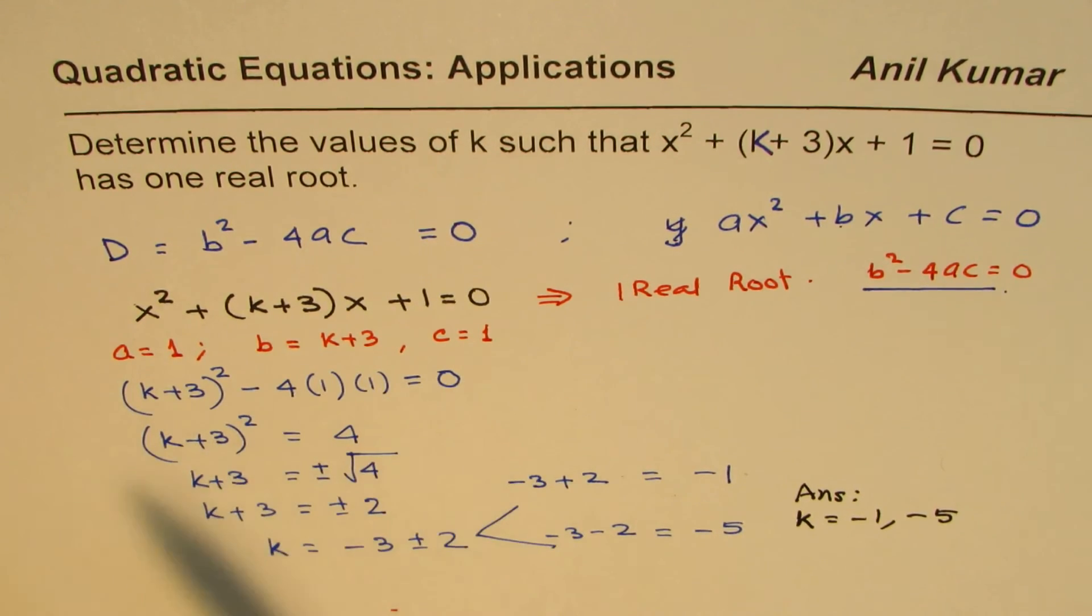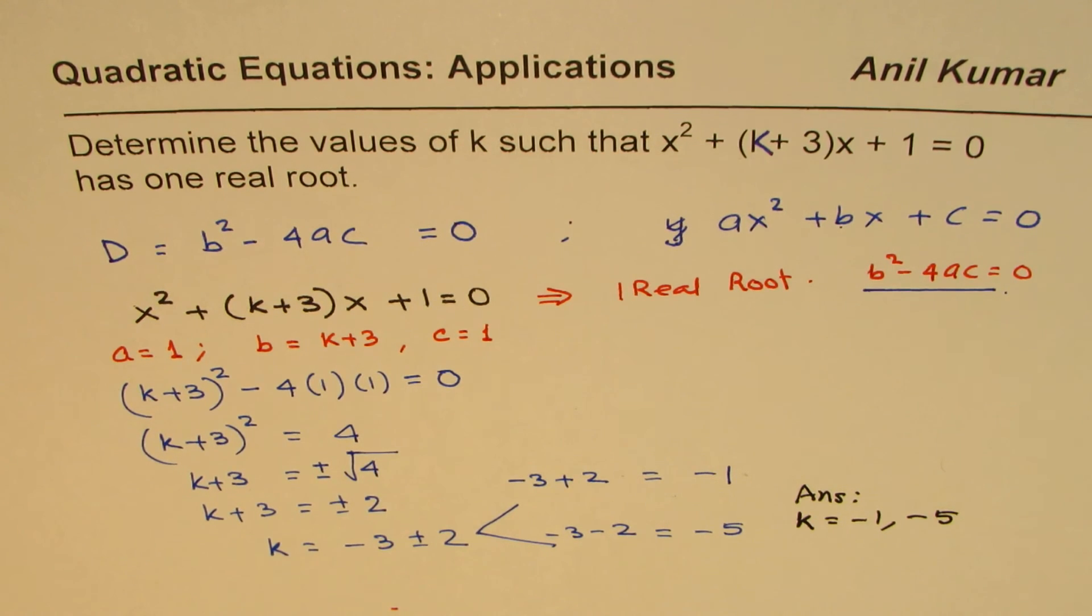So that is how you can solve this question. I hope you like the idea of taking 4 to the right side, square root, and then finding k. That is probably a very efficient way of doing this. I'm Anil Kumar, you can always share and subscribe to my videos. Thank you and all the best.